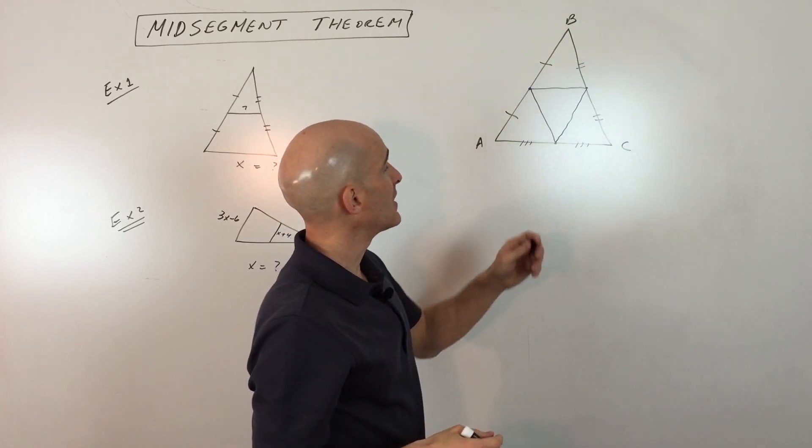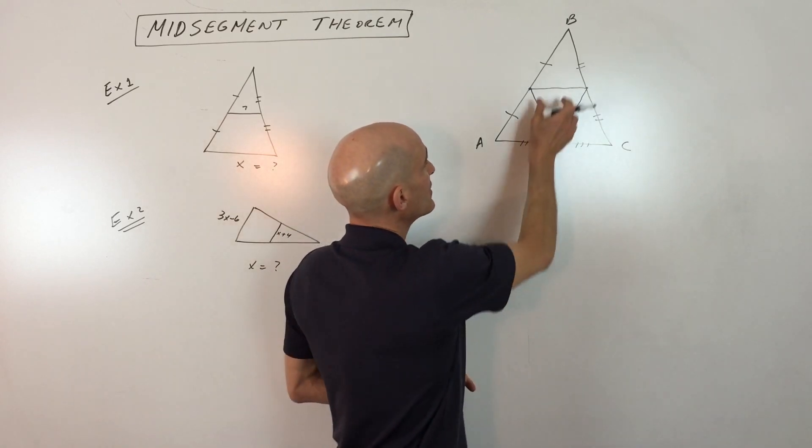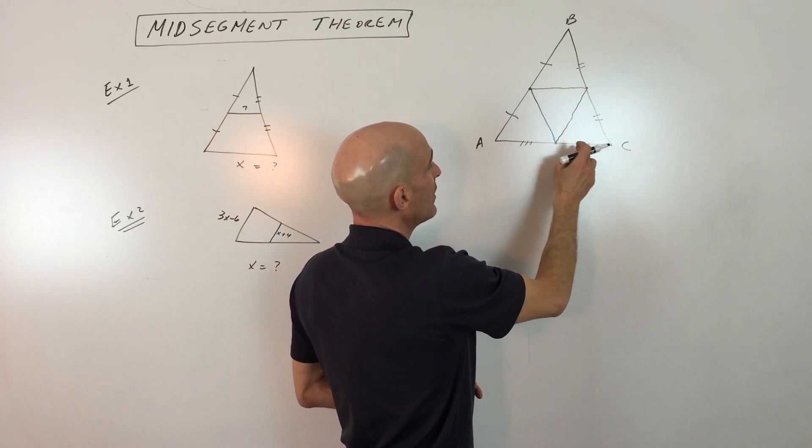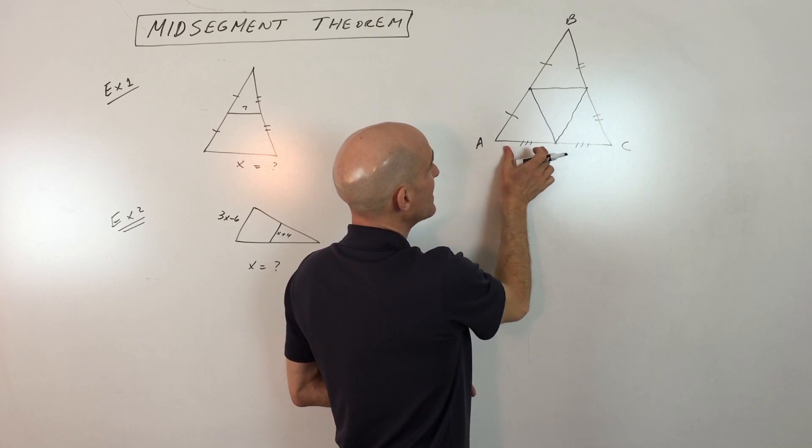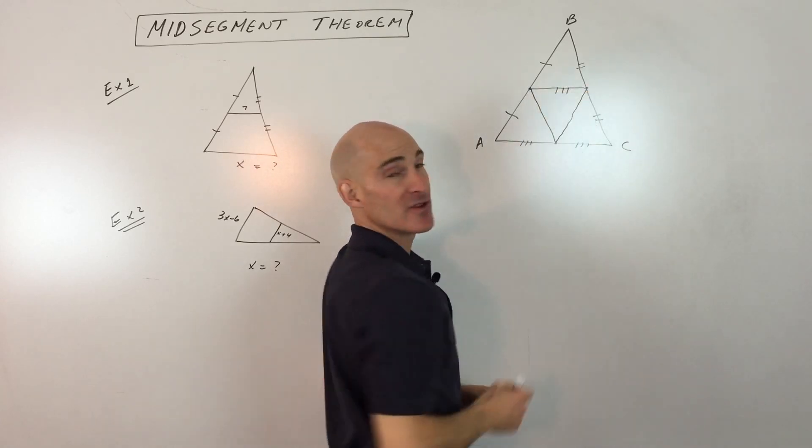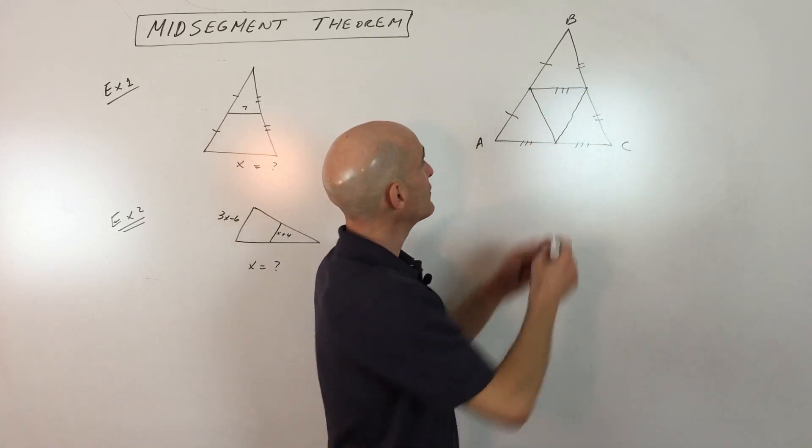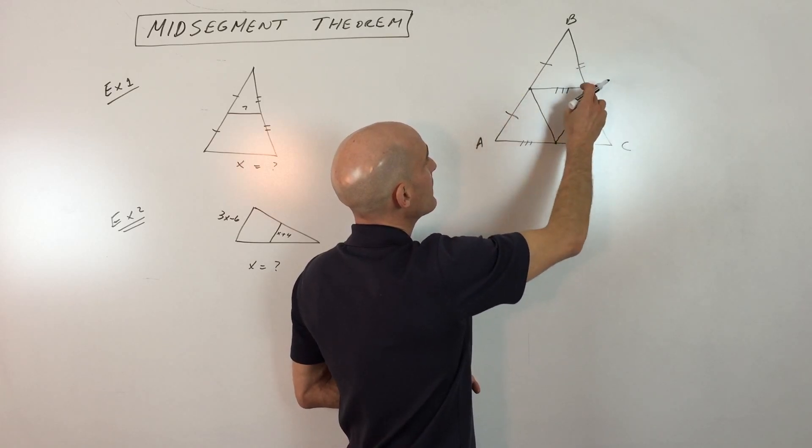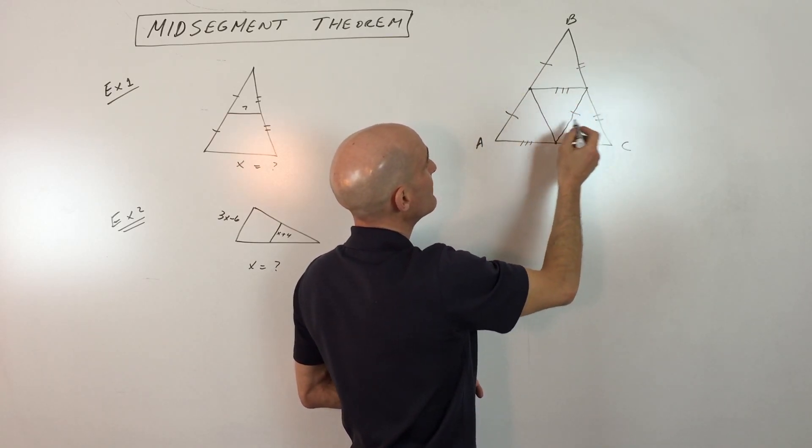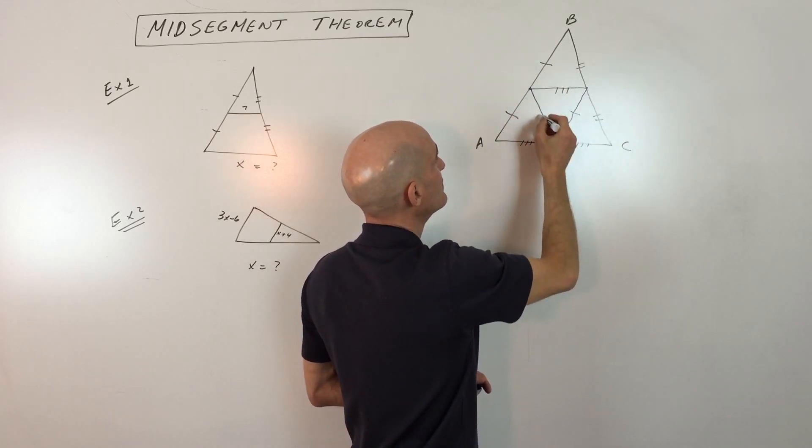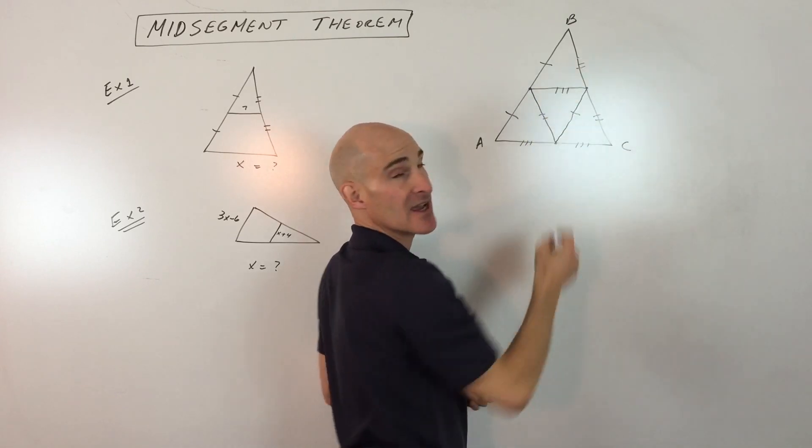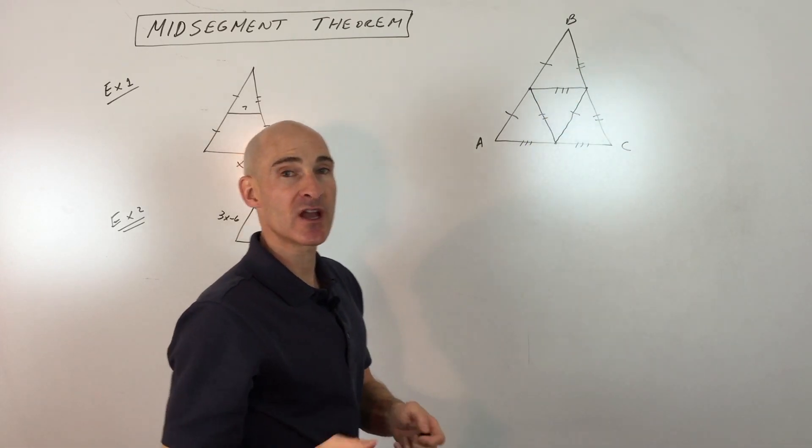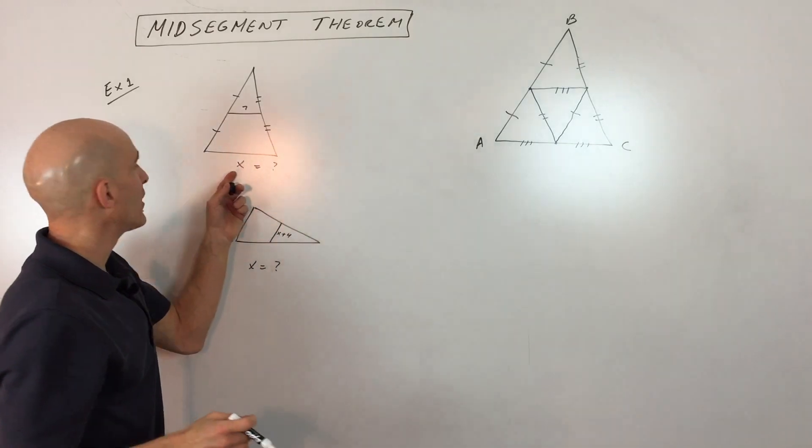Now, another interesting property that sometimes students overlook is that because this length is half of the base, this segment, this segment, and this segment are all going to be the same length. Same thing over here. If these are the same, this midsegment is going to be the same. And then if these two are the same, these three are going to be the same. So let's look at a couple examples and we'll understand this a little bit better.